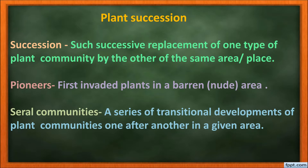Plant succession: we can notice a piece of land in different seasons having different types of plants, because they are affected by natural calamities like hot sun, flood, and earthquake, and anthropogenic activities like fire, overgrazing, and cutting of trees. Men cut trees and destroy plants, making an area barren. But after a period of time, we can see plants arising in that area naturally.